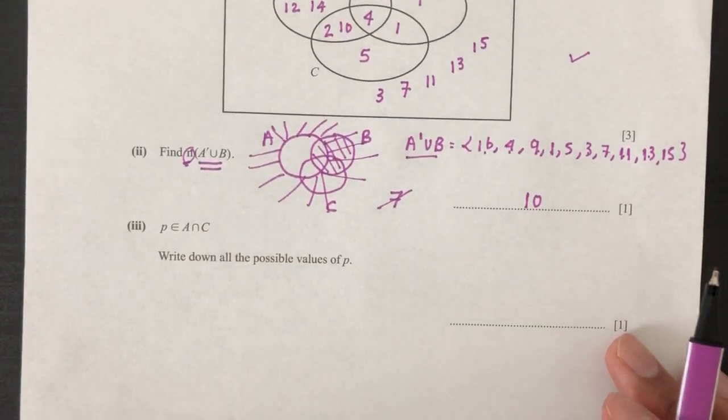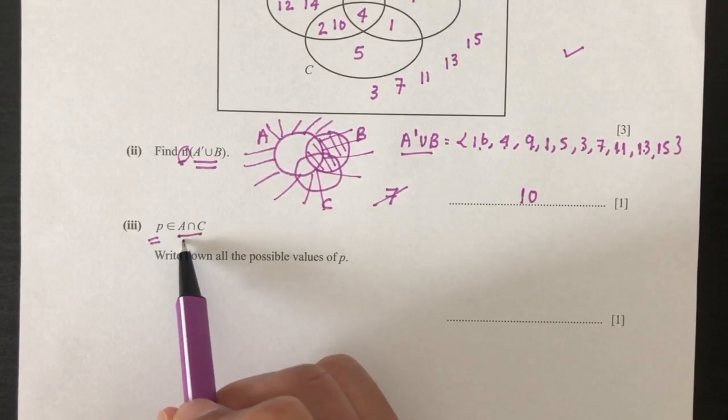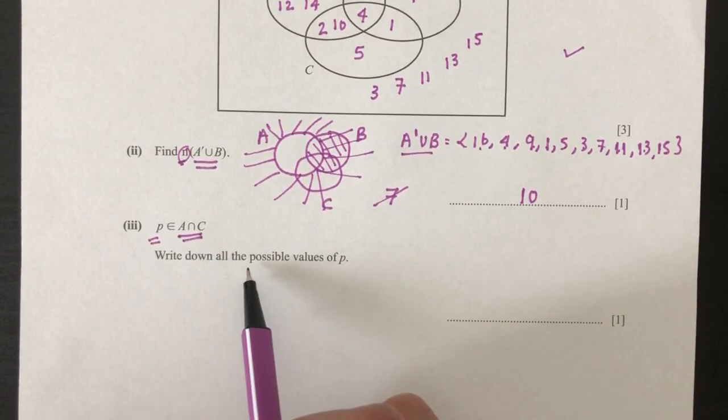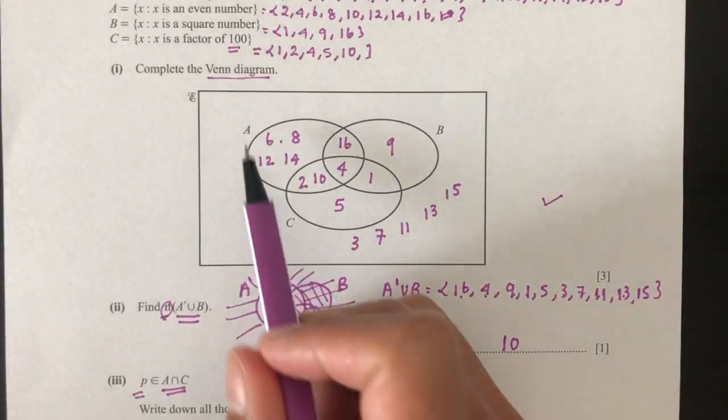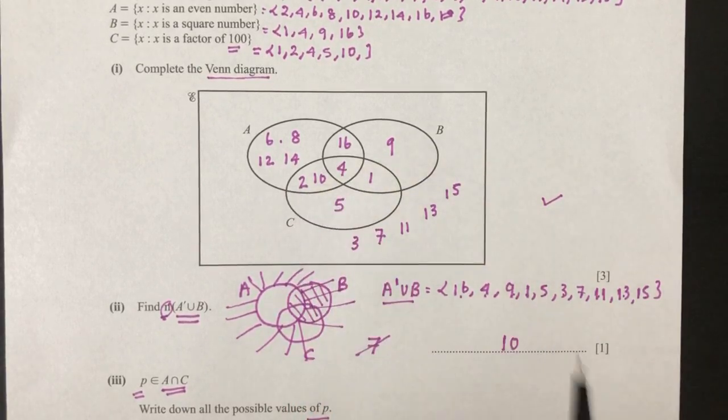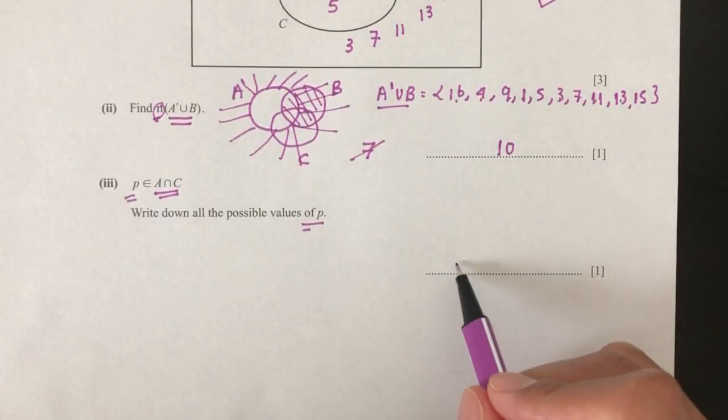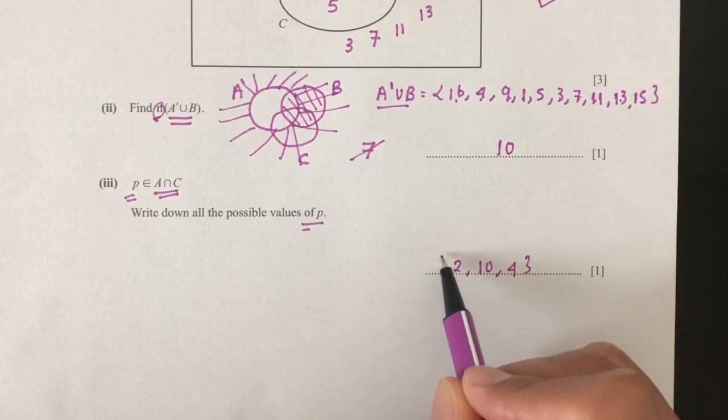Now for part 3, we have we know that P is inside of A intersecting C. Write down the values of P. So what is A and C? As you can see, A and C will be this one. It can be 2, 10, or 4. This will be the values of P.